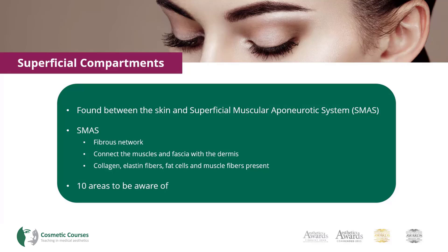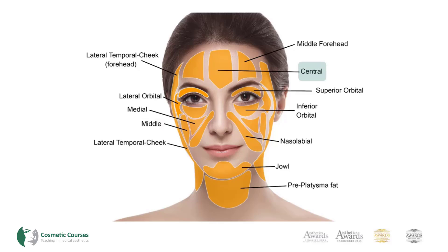There are 10 different areas that we need to be aware of in this layer. The first is the central fat compartment, found in the midline of the forehead. Laterally to this is the middle temporal fat compartment, which is bound inferiorly by the orbicularis retaining ligament. Moving further laterally, we see the lateral temporal cheek compartment, which connects the lateral forehead fat to the lateral cheek and cervical fat. The fat here lies immediately superficial to the parotid gland.